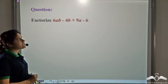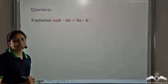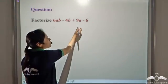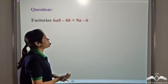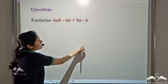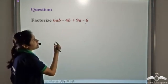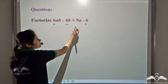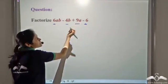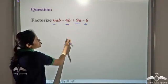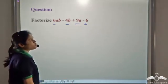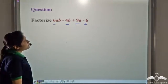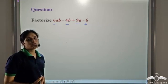Now factorize 6ab minus 4b plus 9a minus 6. First we check whether there is a common factor among all four terms. We have 6 in two terms but not all. Three of the terms have 2 as a factor but not all. Three terms have 3 as a factor but not all. We have b in two terms but not the other two. We have a in two terms but not all. So we can't find a factor common to all four terms.